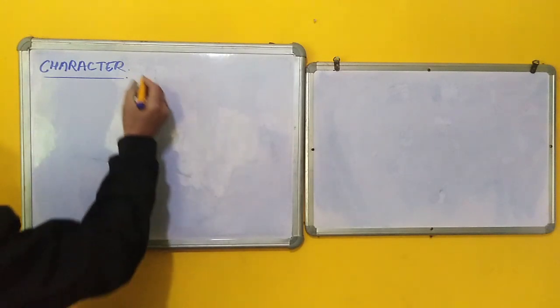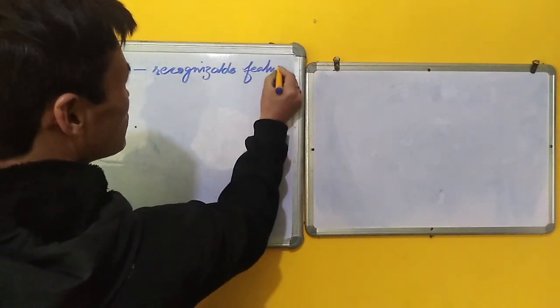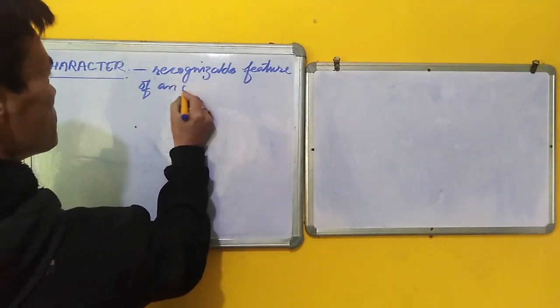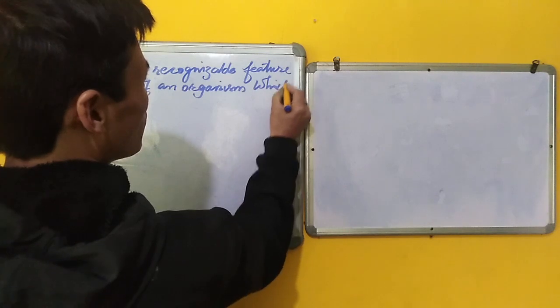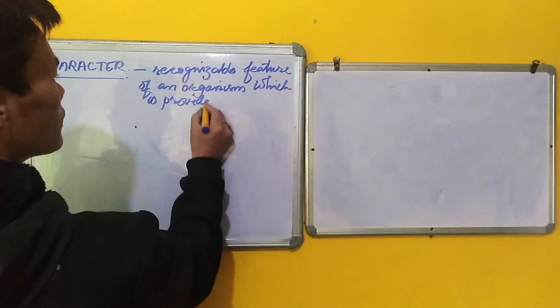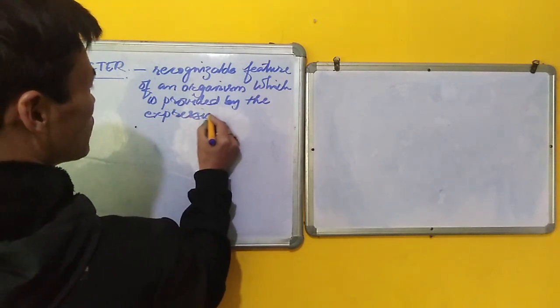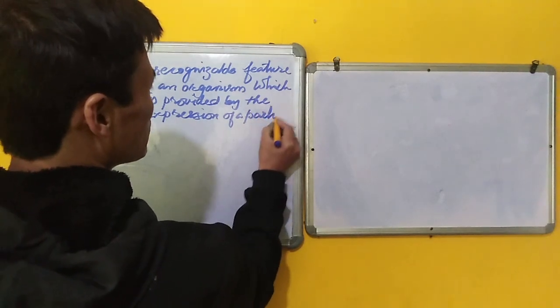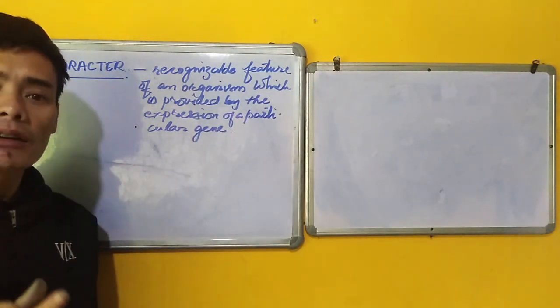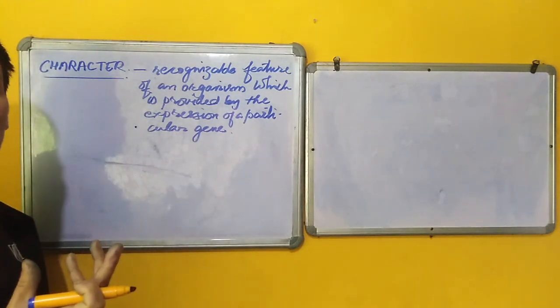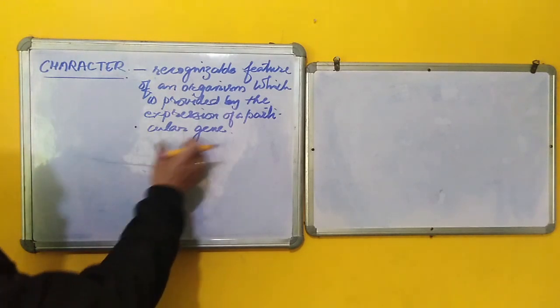The next term that we will try to understand is the character. The character is nothing but the recognizable feature of an organism which is provided by the expression of a particular gene. Here, a feature which we observe in the living organism is a character. And this character is brought about by the expression of a particular gene.